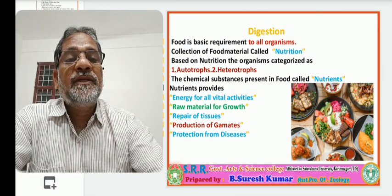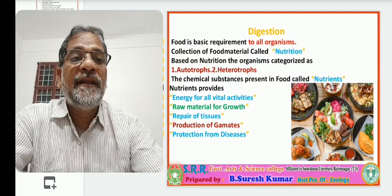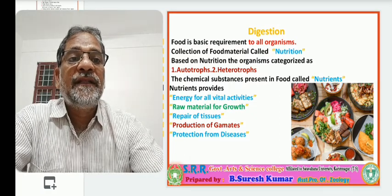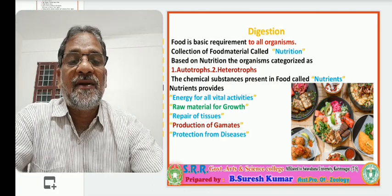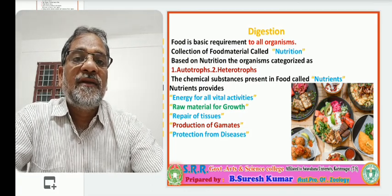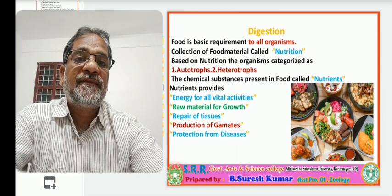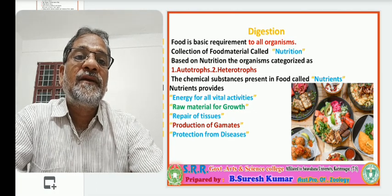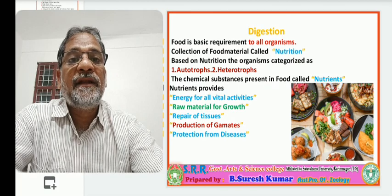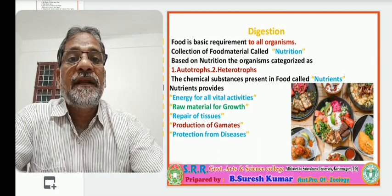The chemical substances present in food are called nutrients. Whatever food material we consume in our daily life, those food materials contain various chemical substances. Such chemical substances are called nutrients. The function of nutrients is to provide energy for all vital activities in the body. Various kinds of physiological processes occur daily. All these vital activities require energy.